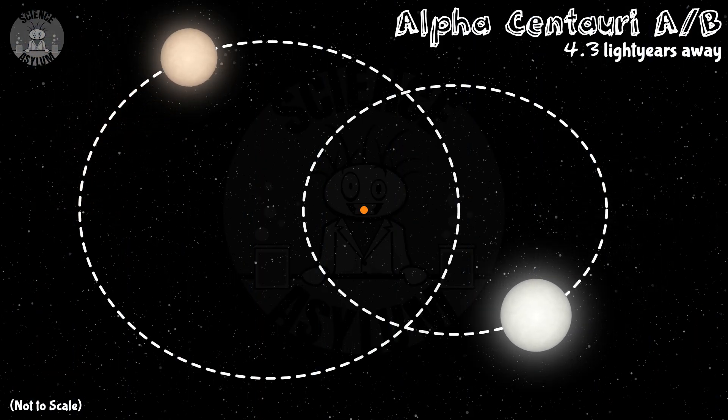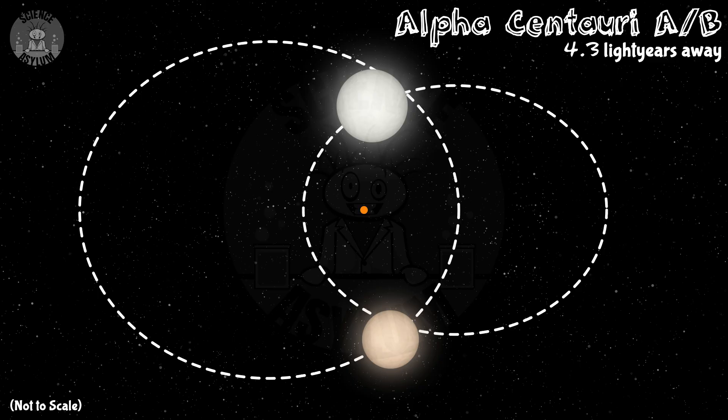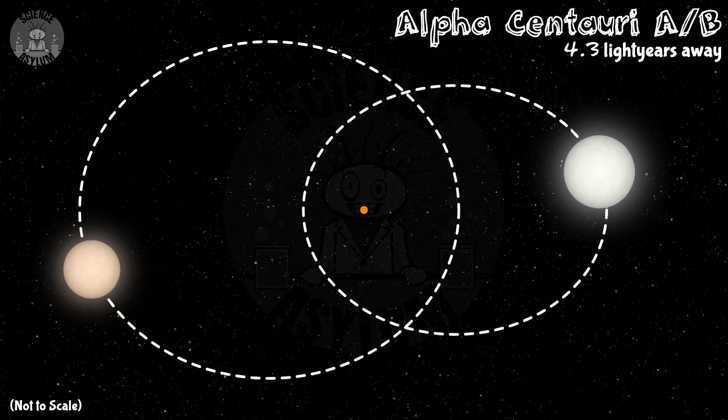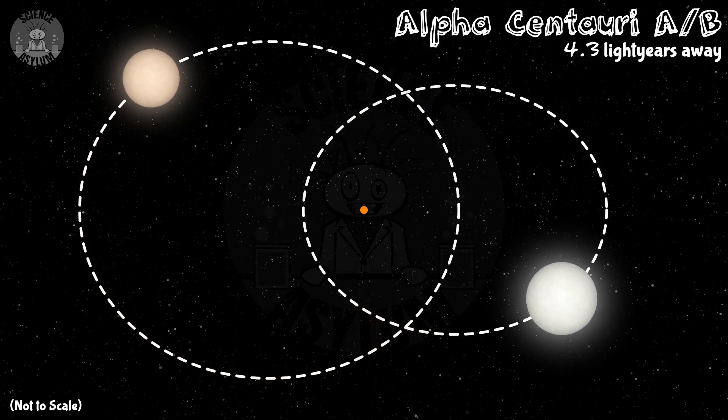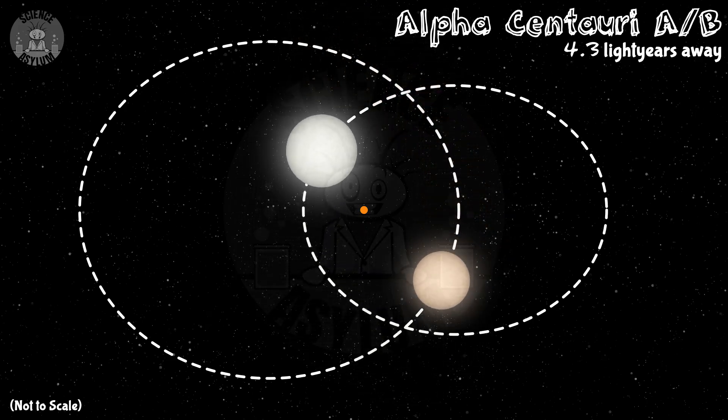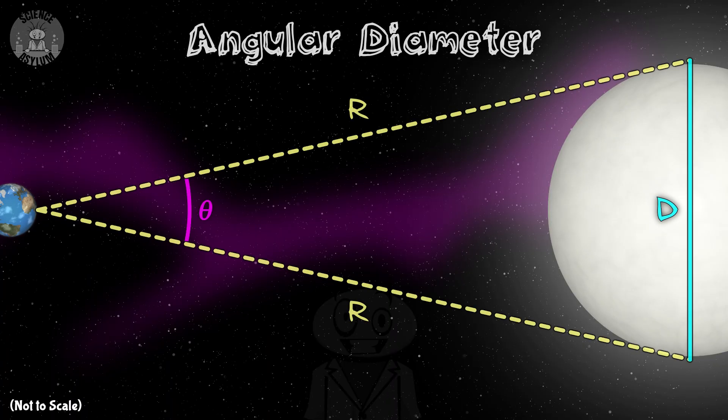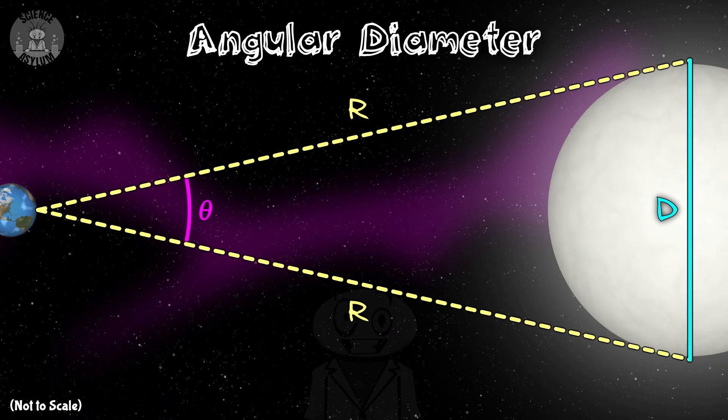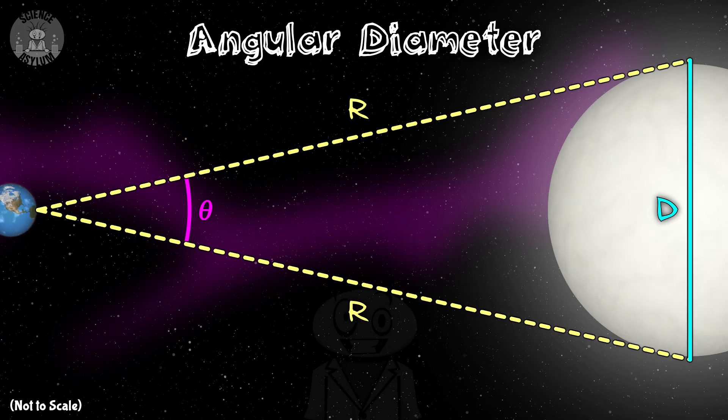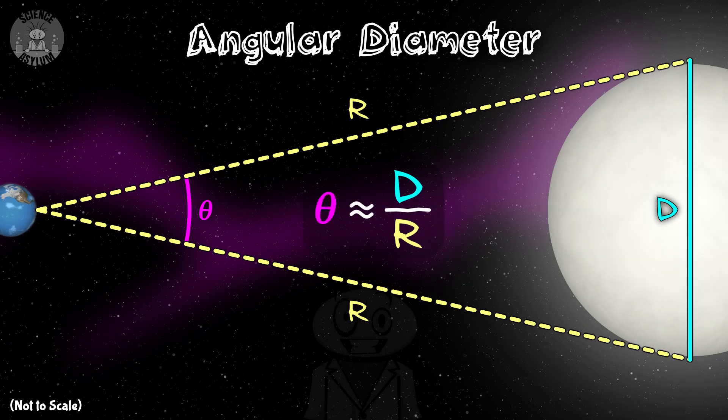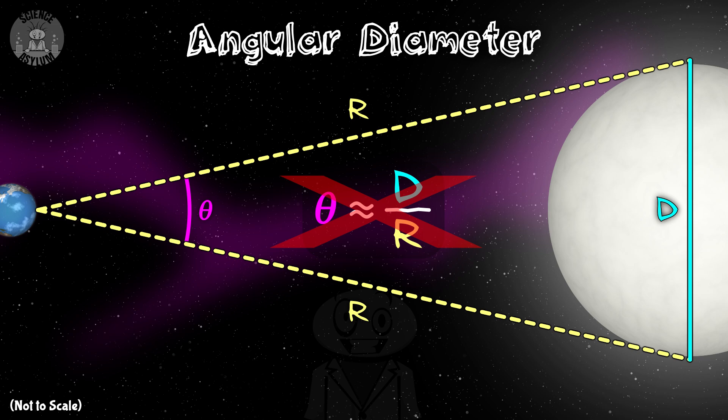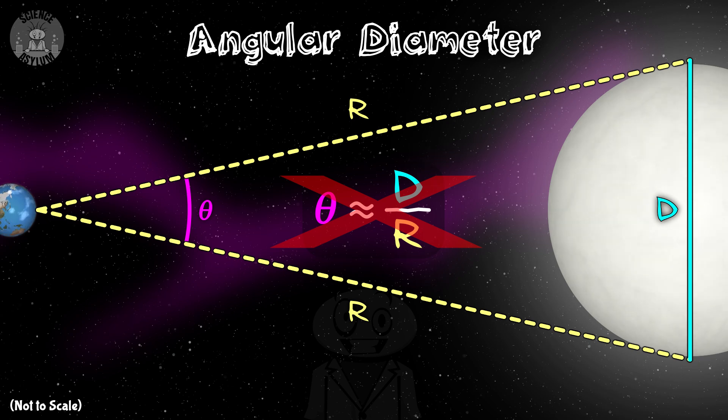Alpha Centauri is the closest star system to the Sun and it's a little over four light years away. That means light takes over four years to travel that distance. Four years! And that's the closest one. We can certainly draw the angular diameter triangle on this image. And Alpha Centauri is close enough that the simple rule applies. But in general, it's becoming clear that time is going to be a major factor.